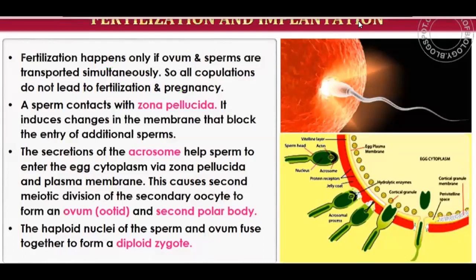The sperm contacts the zona pellucida of the ovum, which induces changes in the membrane that block the entry of additional sperms. The secretions of the acrosome help the sperm enter the egg cytoplasm via the zona pellucida.